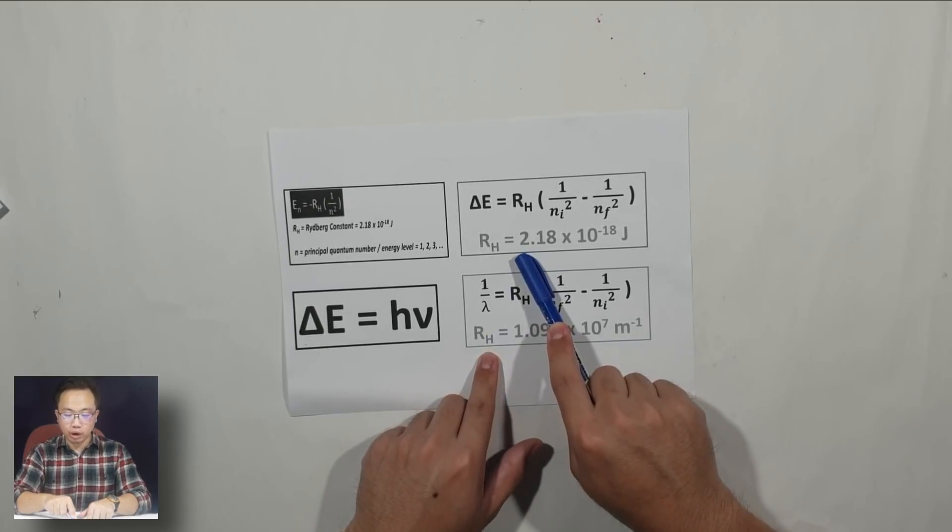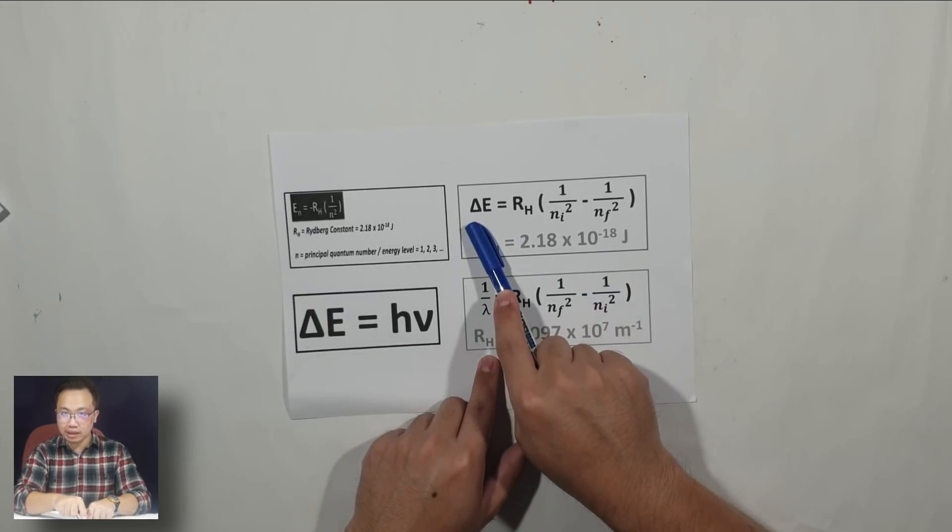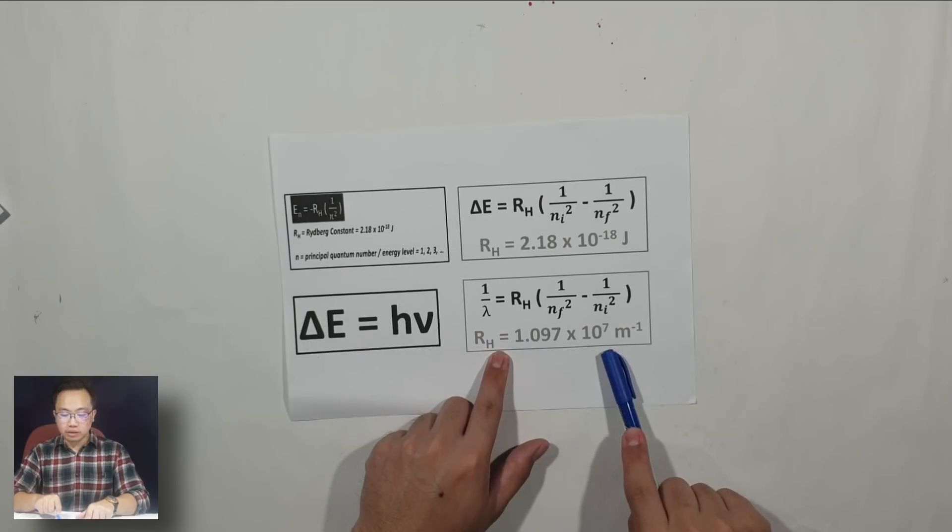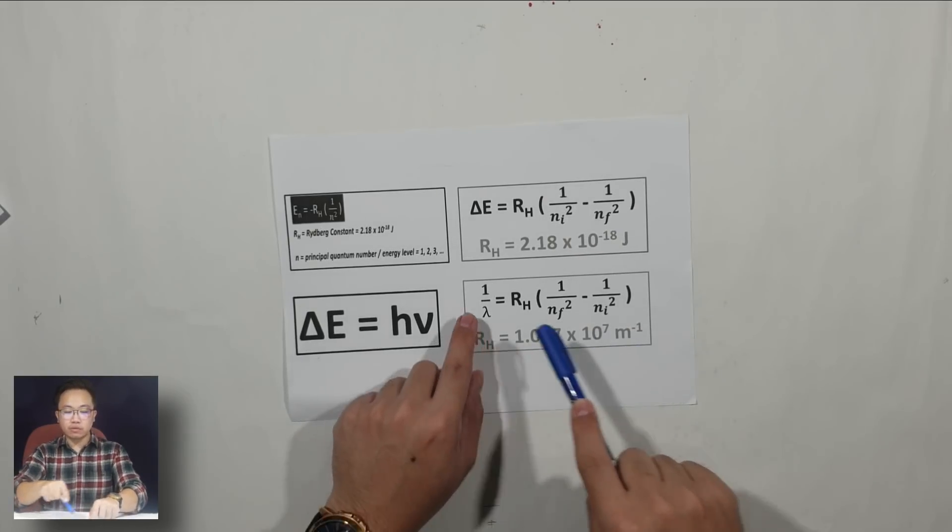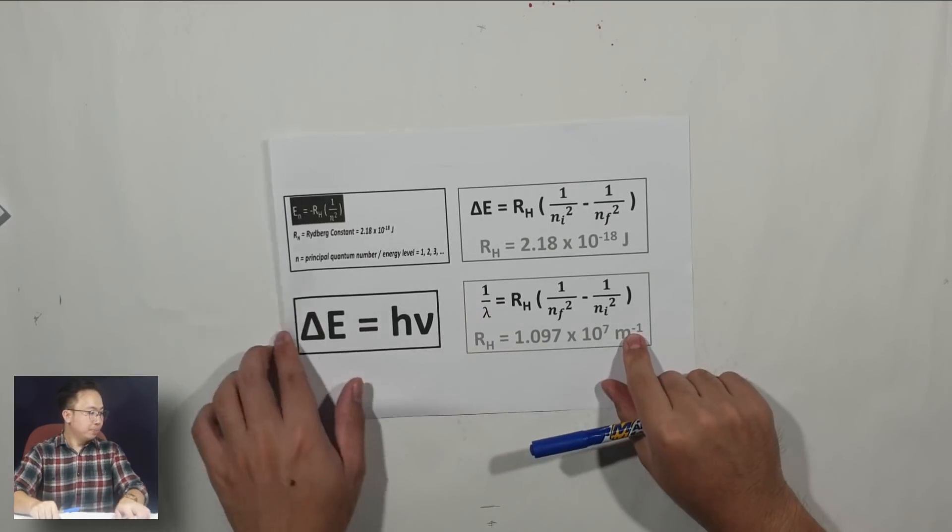Alternatively, you can use this formula down here. But you need to be careful because you have two types of Rydberg constant value. This one is 2.18 times 10 to the negative 18 Joule for delta E. But this one is 1.097 times 10 to the power of 7 per meter, for the wave number 1 over lambda. Remember that.